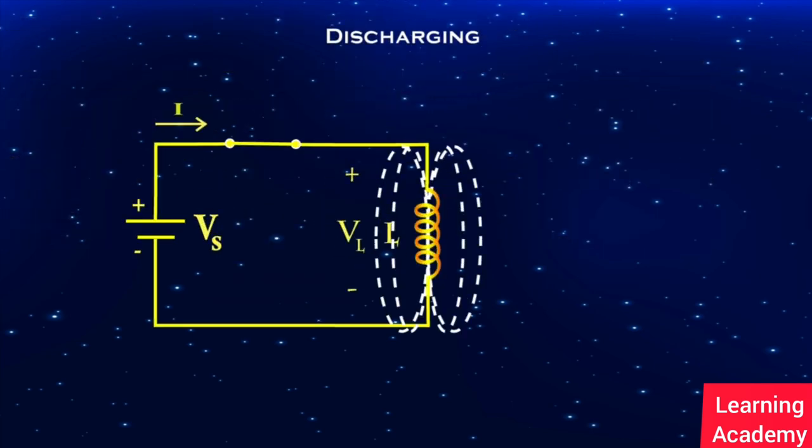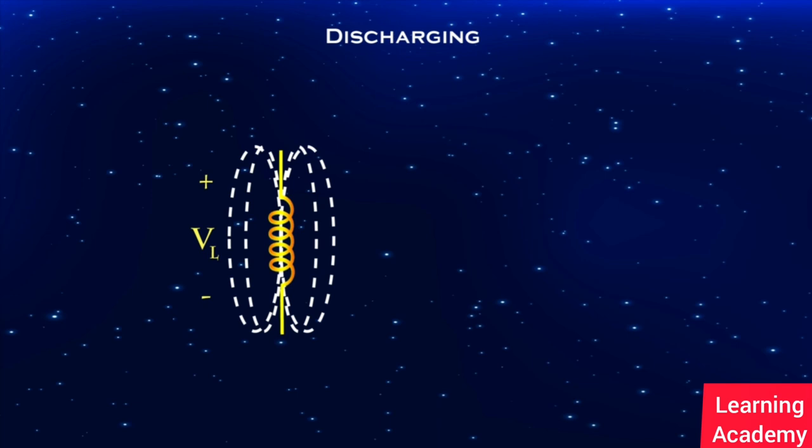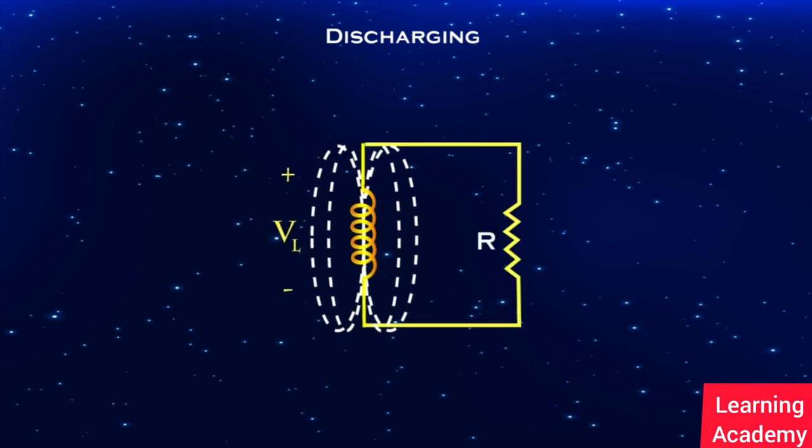Let's see what happens if we remove the inductor from the circuit and connect it to a resistor. The inductor acts as a current source because it has stored energy in the form of magnetic field.